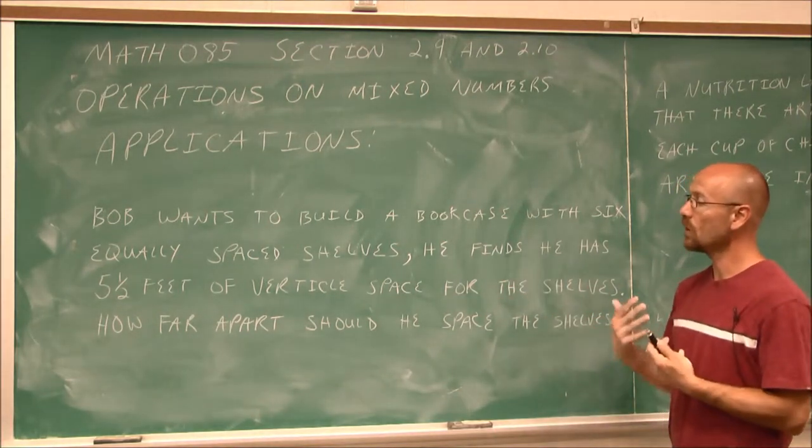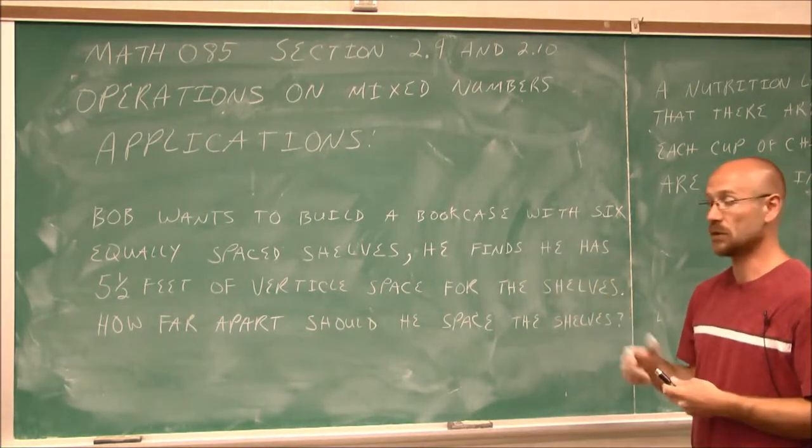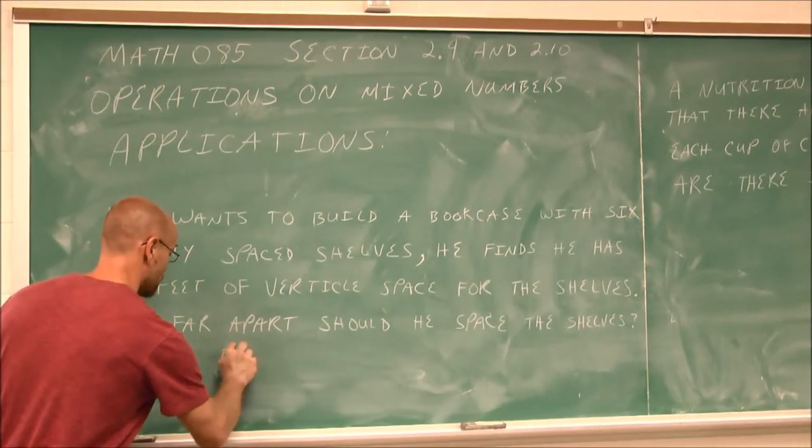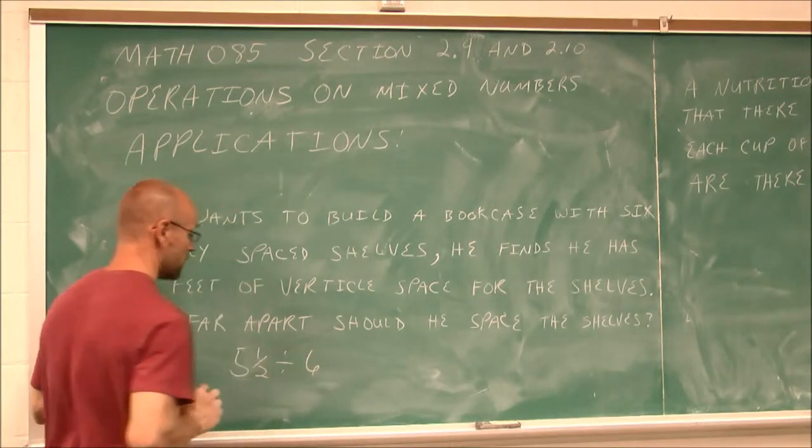So the operation we have to do here with these mixed numbers is division. So I'm going to divide 5 and 1/2 feet divided by 6.